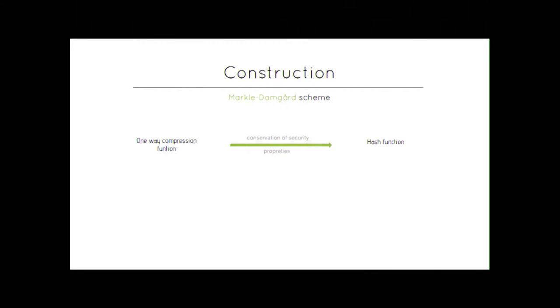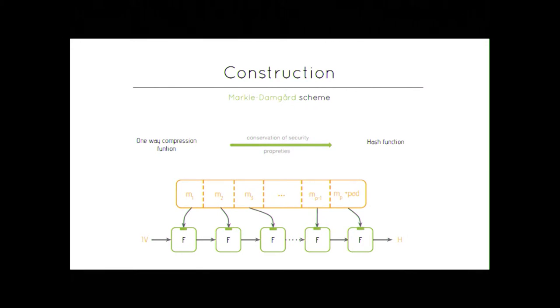Let's talk a bit about the construction of hash functions. When you take a one-way compression function, you want to conserve its security properties through a domain extender, and then get a hash function. A common way to achieve that is to use the Merkle-Damgård scheme, which basically takes a big message of whatever length, splits it in chunks of equal size with padding if necessary, then gives it to your compression function with an IV. The result is given as the IV of the compression function at the second run, and then you give the second chunk, etc., until you get your final hash.